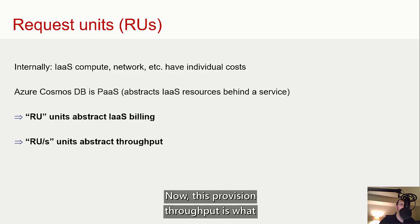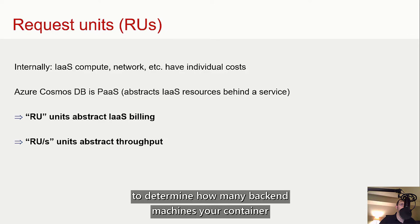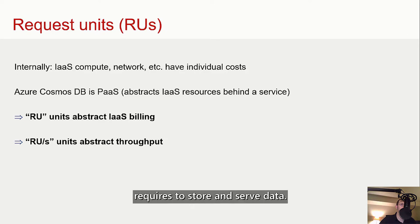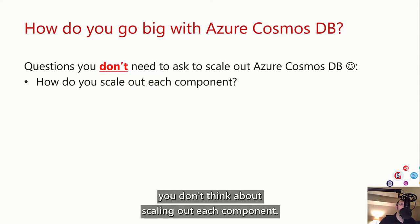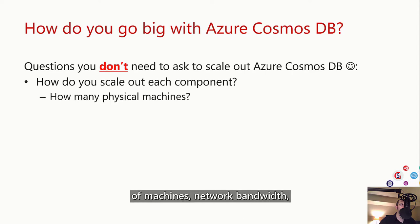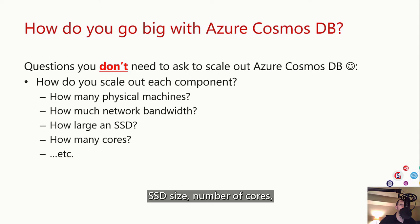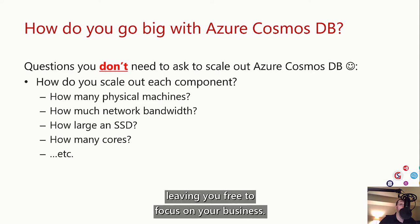This provisioned throughput is what Azure Cosmos DB looks at, along with data volume, to determine how many backend machines your container requires. With Azure Cosmos DB, you don't think about scaling out each component — you don't have to worry about the number of machines, network bandwidth, SSD size, number of cores, or anything else like that, leaving you free to focus on your business.